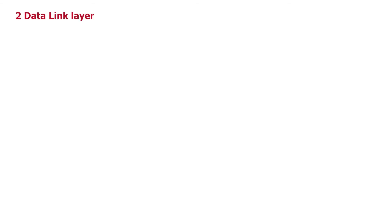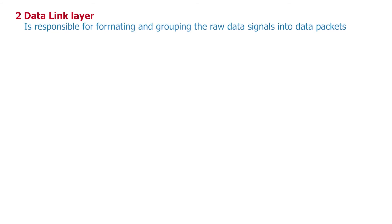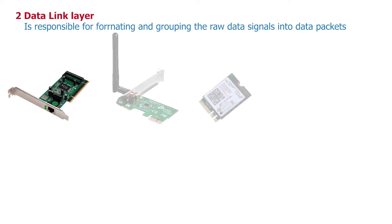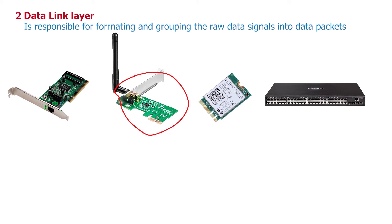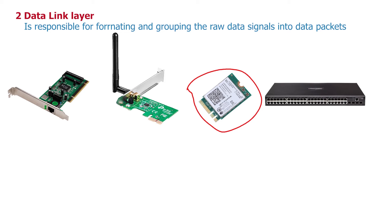This brings us to the next layer of the OSI model called the data link layer. This layer is responsible for formatting and grouping the raw data signals into data packets before transmitting them through the physical layer. Examples of layer 2 devices are network interface cards, wireless access cards, and network switches. The main function of this layer is to convert and format raw bits into data packets and frames that are passed to higher layers.